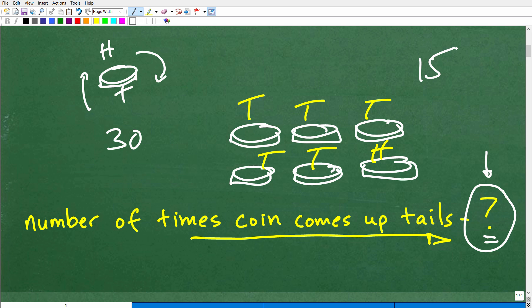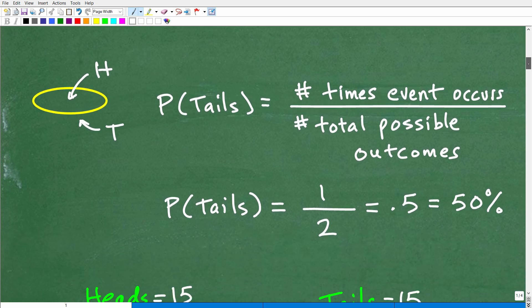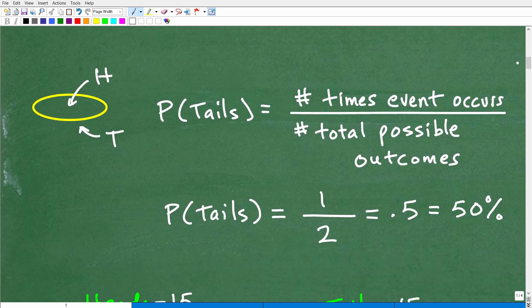15 out of 30 times it would come up tails. That's a reasonable guess, but there's absolutely no way that we can guarantee that we know exactly that, in fact, that is going to be the case. But let's talk about some really big picture basic concepts in probability that is really going to kind of tie in all these concepts I'm talking about.